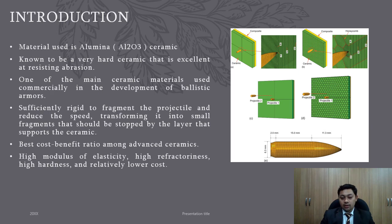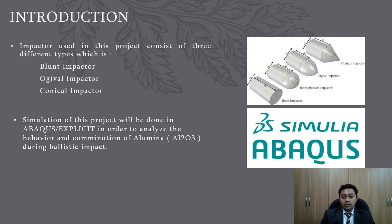As the layer of ceramic is impacted by the projectile, it will fragment it and blunt the projectile to stop it from penetrating the ceramic armour. For this project, three different types of impactors have been chosen: a blunt impactor, an ogival impactor, and a conical impactor. The simulation of this project will be done in Abaqus Explicit in order to analyse the behaviour and comminution of alumina AL2O3 during ballistic impact.